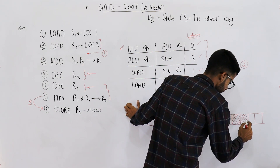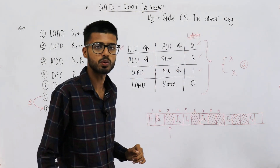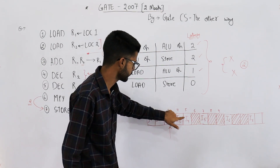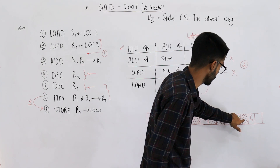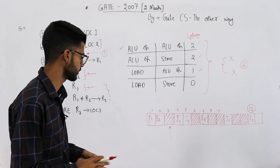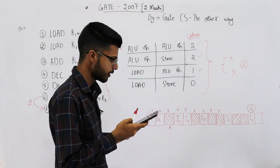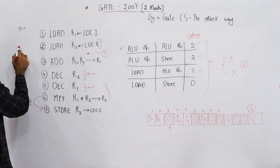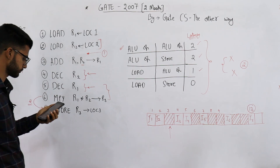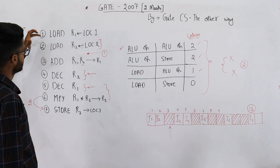Execute instruction six, then two clock cycles of latency, then execute instruction seven. Counting the total clock cycles used: 1, 2, 3, 4, 5, 6, 7, 8, 9, 10, 11, 12, 13. The answer is 13 clock cycles. The options are 7, 10, 13, and 14, so option C — 13 — is the correct answer.